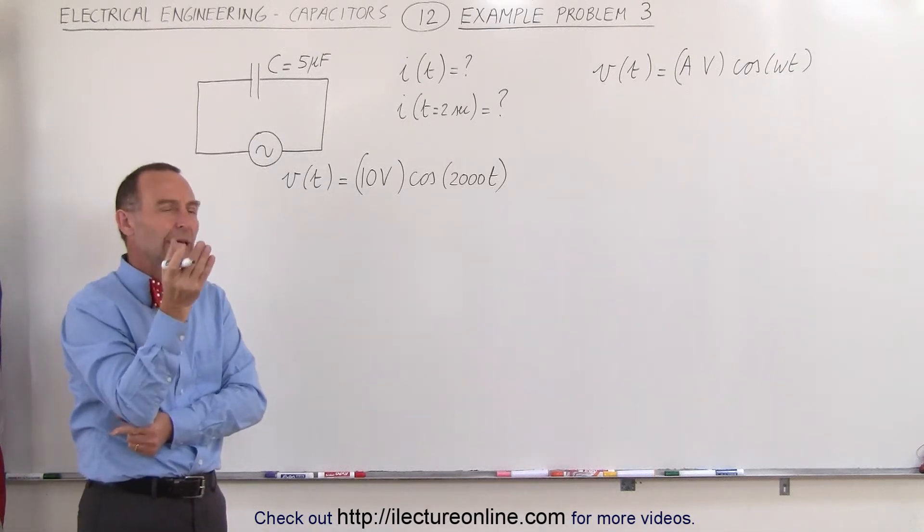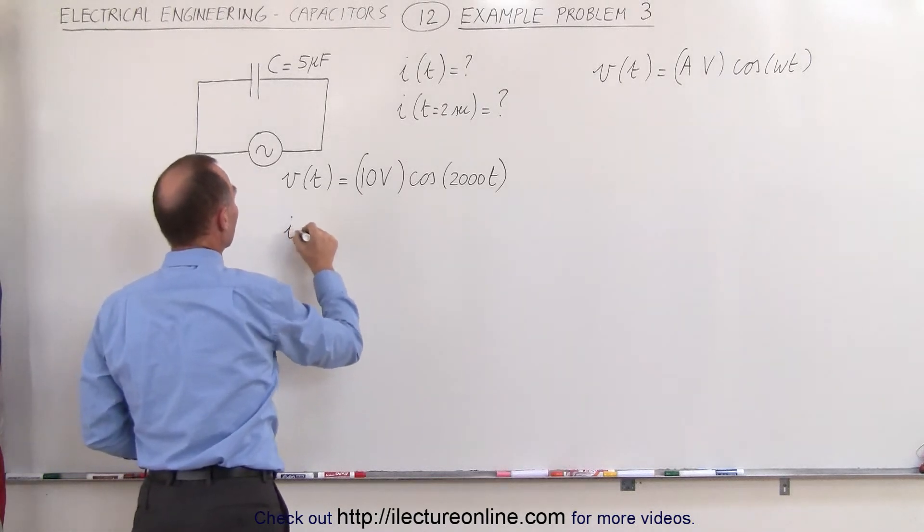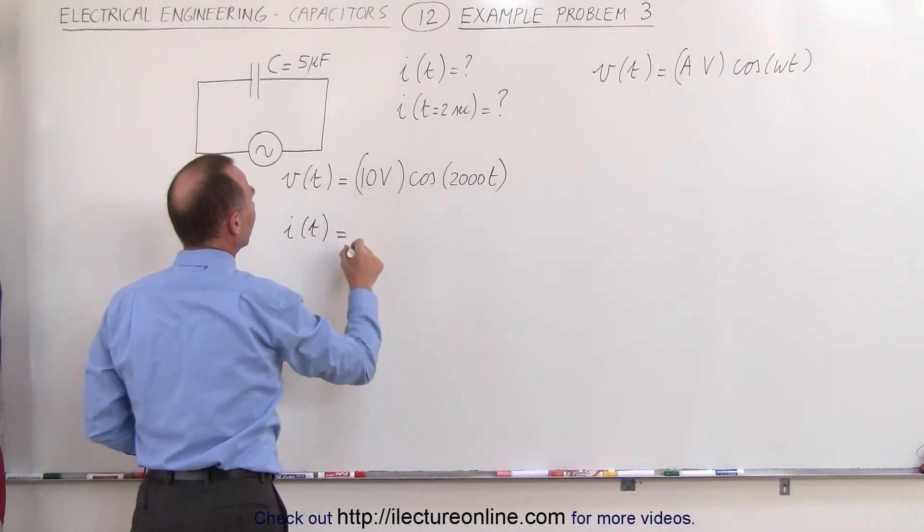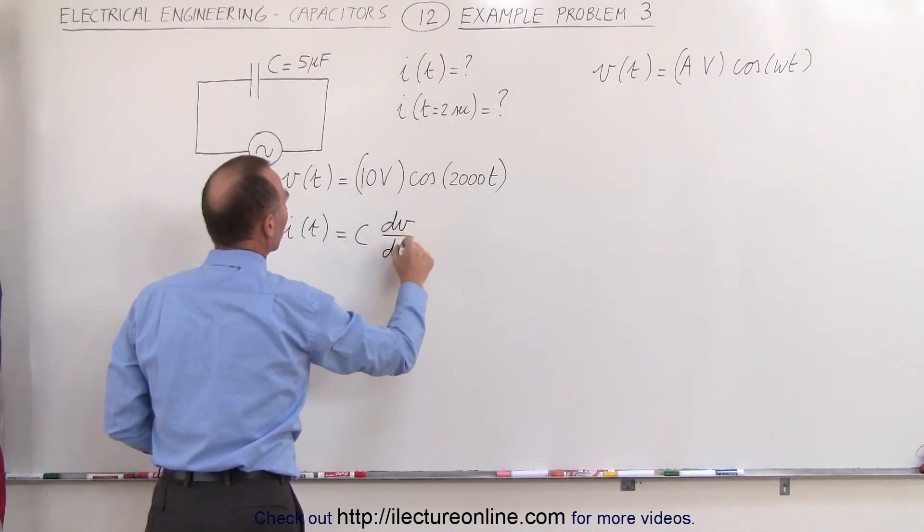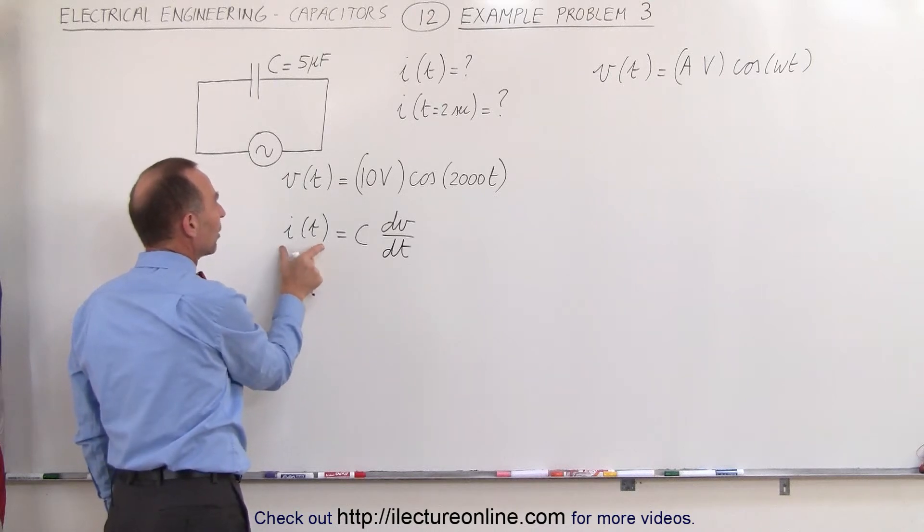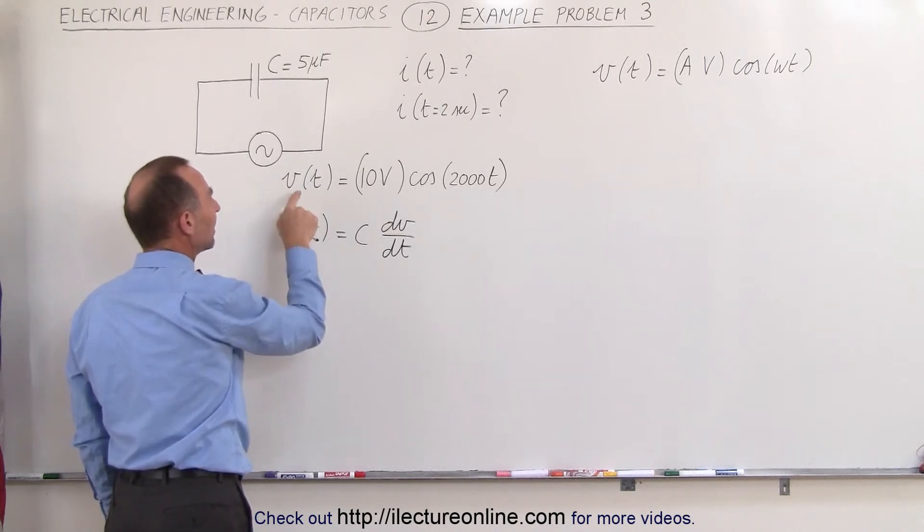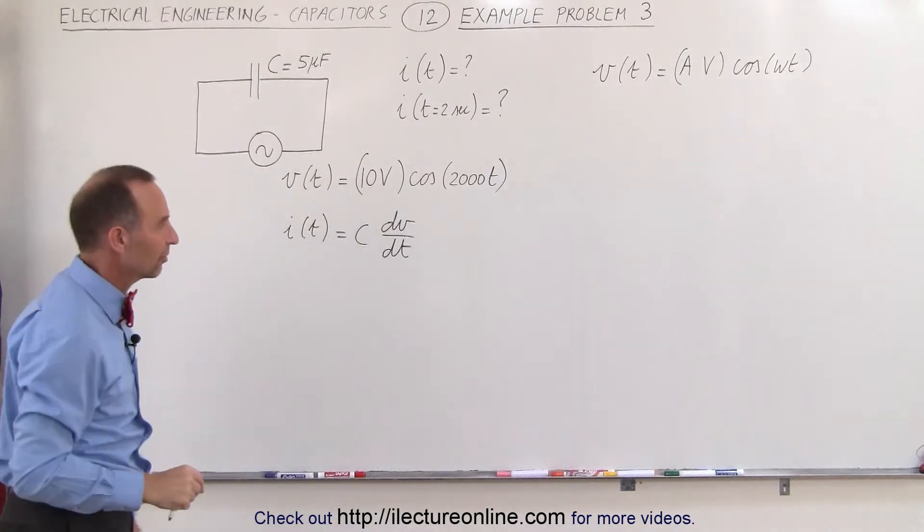So we have to find the equation that relates the current to the voltage, and the one that does is we can say that the current as a function of time is equal to the capacitance times the rate of change of the voltage with respect to time. Which means to find an equation representing the current in the circuit, we need to take the derivative of the equation that represents the voltage with respect to time.